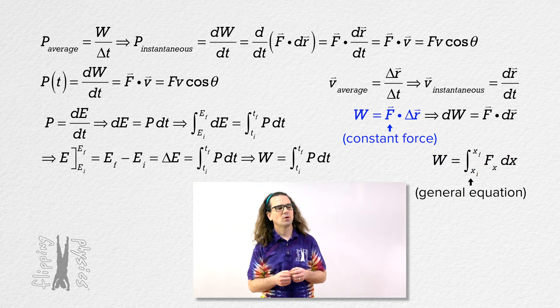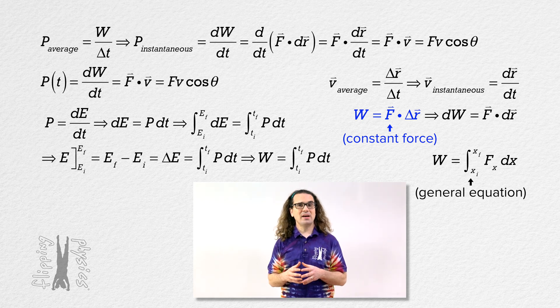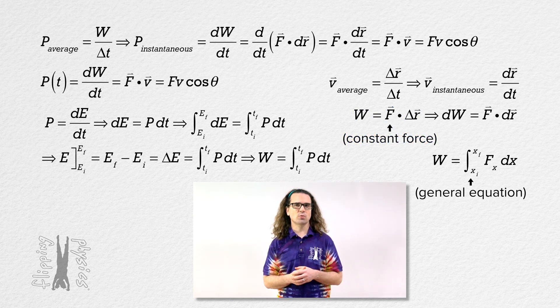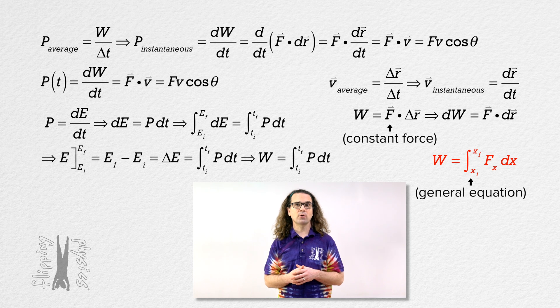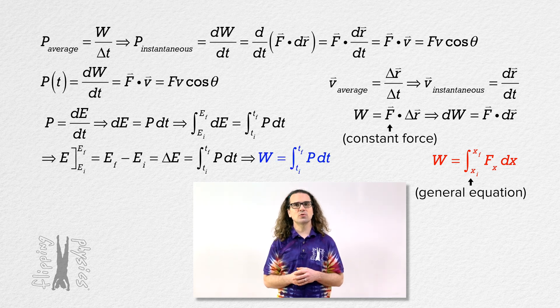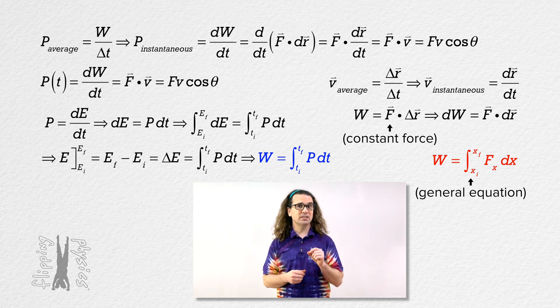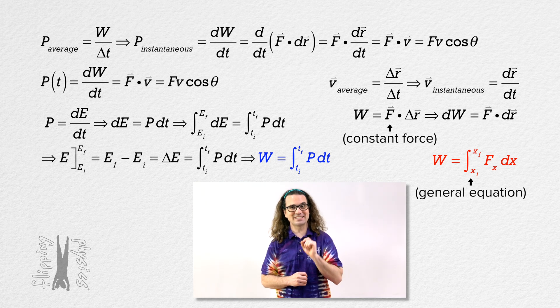Not to be confused with the dot product equation for work, which is work done by a constant force. Right. That means we now have two integral equations for work. One integral work equation has to do with the force acting on an object and the change in position of that object. The other integral work equation has to do with the power delivered to the object and change in time. Two very similar looking, however, just very different equations for work.